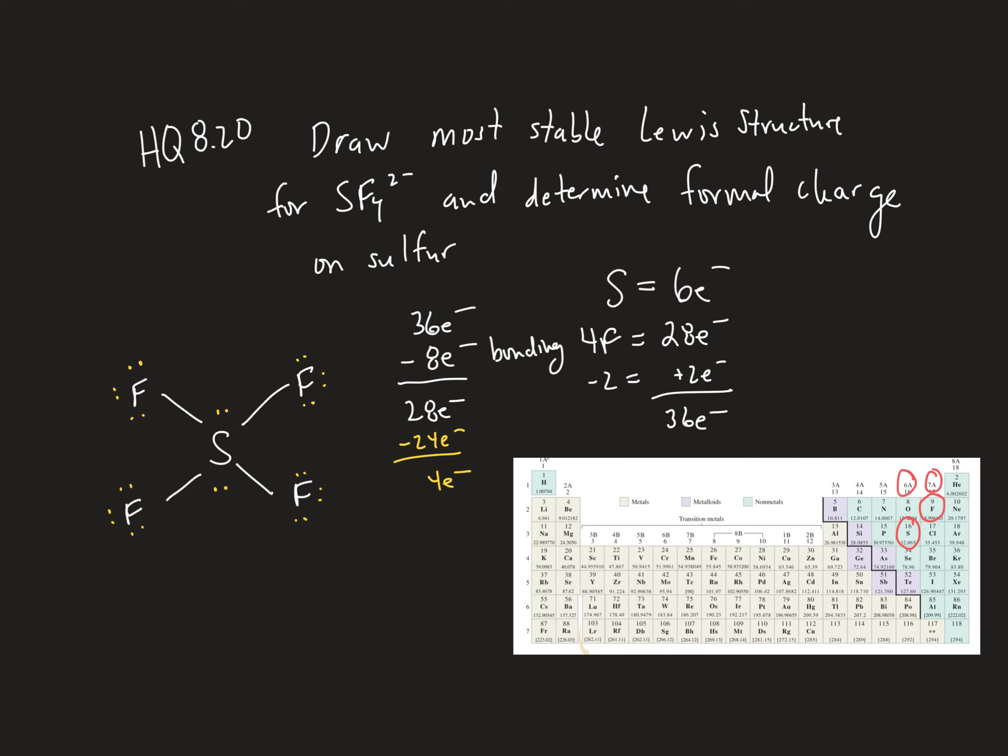Now for the formal charge on sulfur. Sulfur, like I said, is group 6. And when we count the formal charge, we count all non-bonding electrons. So I've got 2 electrons there and 2 electrons there assigned to sulfur. So that's 4 electrons so far. And then we count 1 electron for each bond.